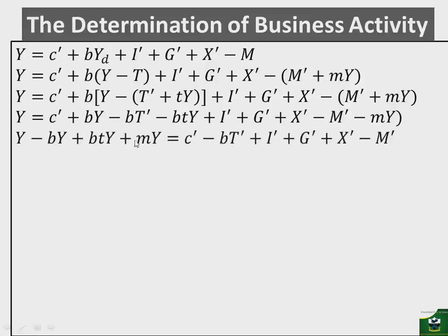Then if we collect like terms, so BY will cross the equal sign, and become negative, minus BTY will cross the equal sign, and become positive, minus MY will cross the equal sign, and become positive. And then the rest will be written the way they are, so C prime is here, we see minus BT prime is here, we see plus I prime is here, G prime is here, X prime is here, and M prime is here. So this whole part, remember, is the autonomous expenditure part.